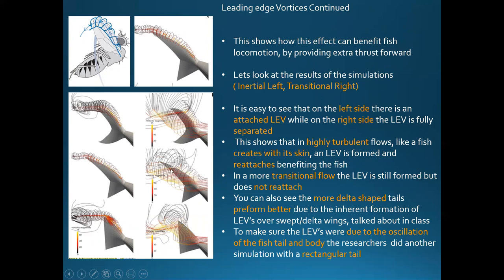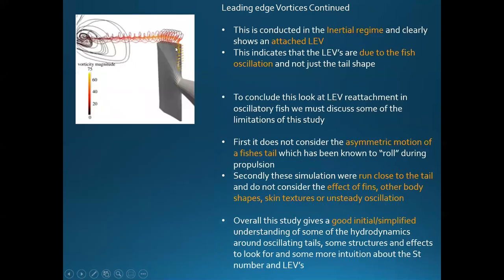The researchers ran another simulation to see if this effect was due to the delta shape of the tails or just the oscillation of the fish. They ran a final simulation using a rectangular tail. Even though a rectangular tail has no capability by itself in a flow to create a leading edge vortex, by the oscillation of the tail a leading edge vortex still forms and stays attached.